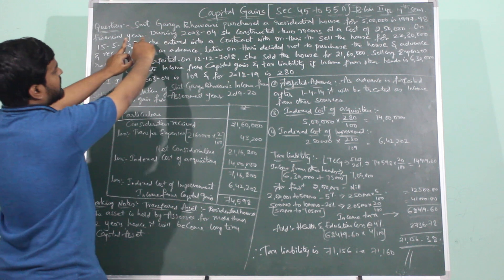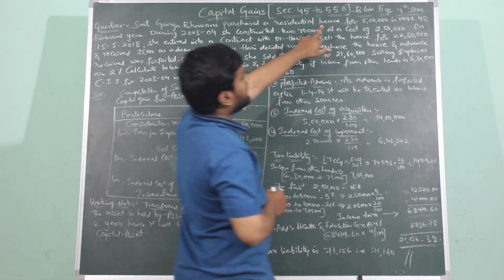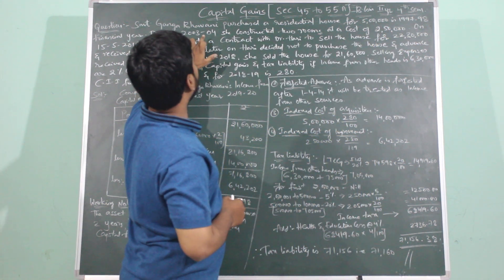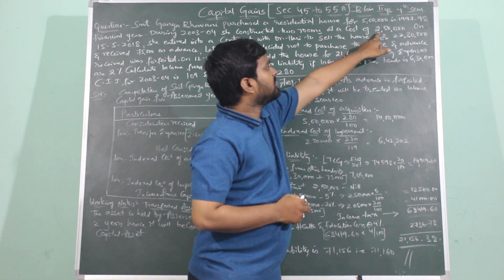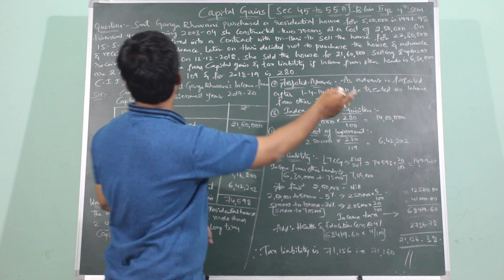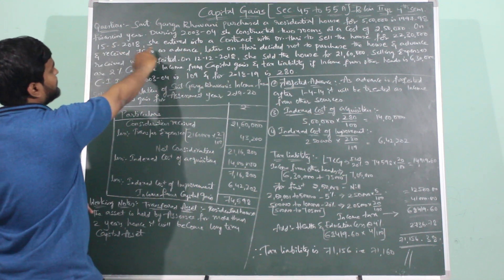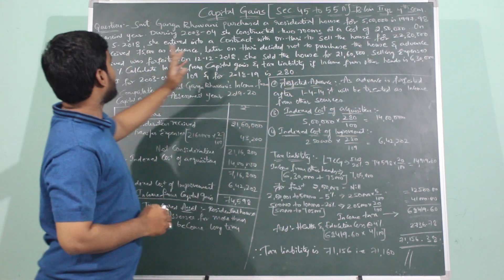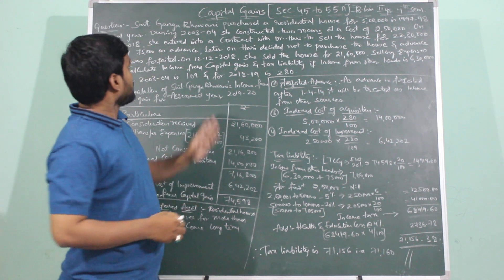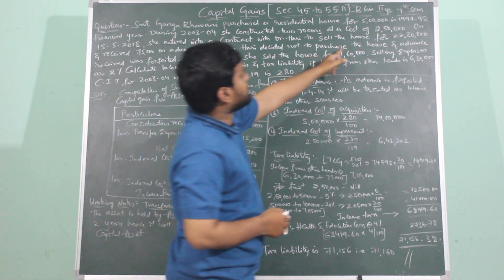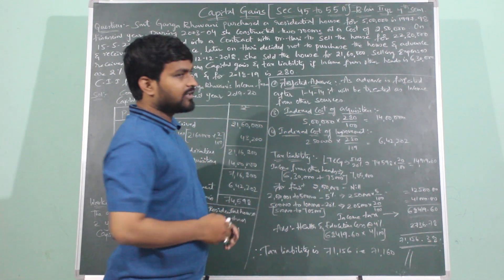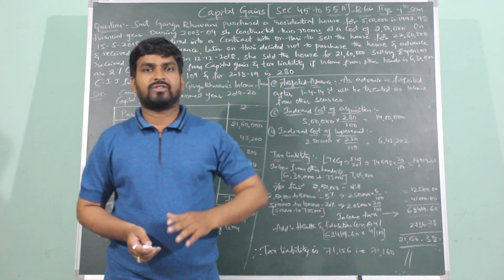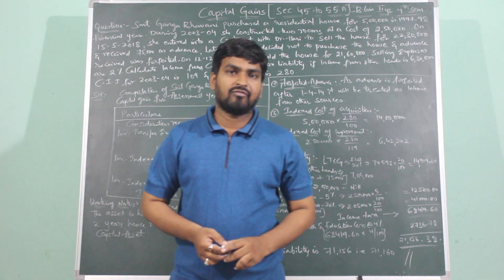Later on, Hari decided not to purchase the house and the advance received was forfeited. Now let us discuss the question. Ganga Bhavani's asset is a residential house, purchased for 5 lakhs in the year 1997-98. During 2003-2004 she constructed two rooms costing 2 lakhs 50 thousand. In 2018 on 15th May she entered into a contract with Dr. Hari to sell the house for 22 lakhs 30 thousand, for which 75 thousand advance was given. Later on Hari denied purchasing the house and the advance of Rs. 75 thousand has been forfeited.